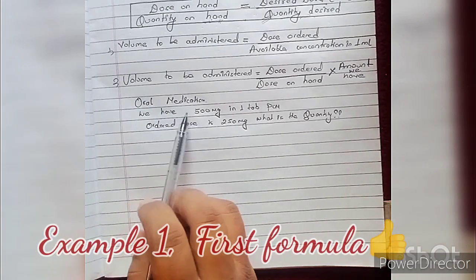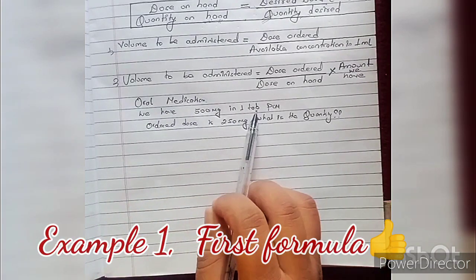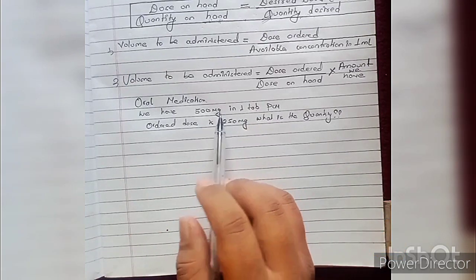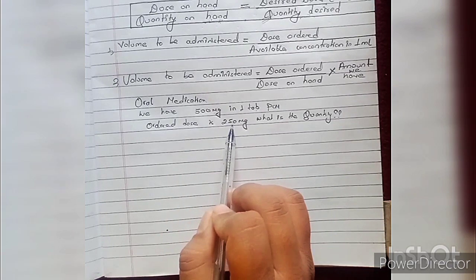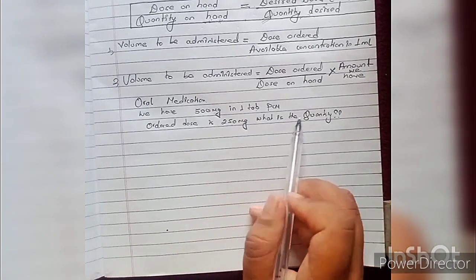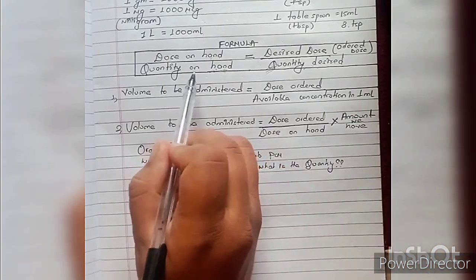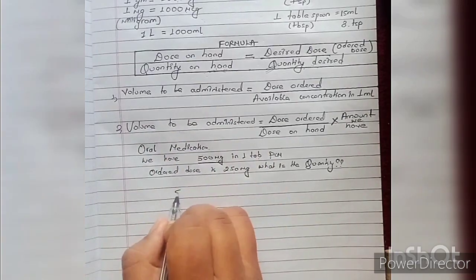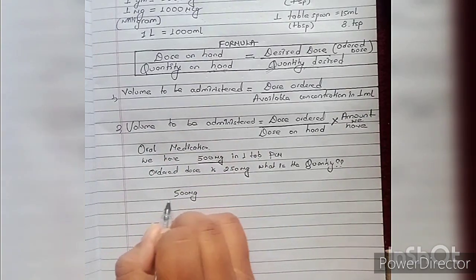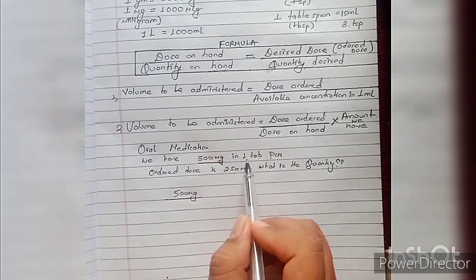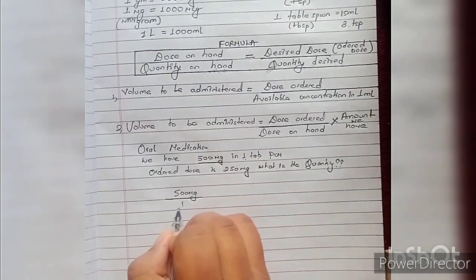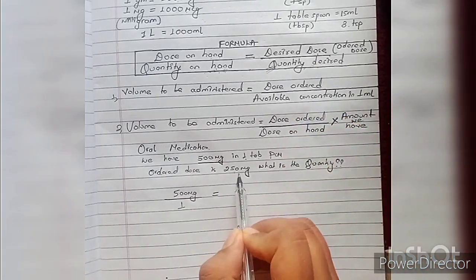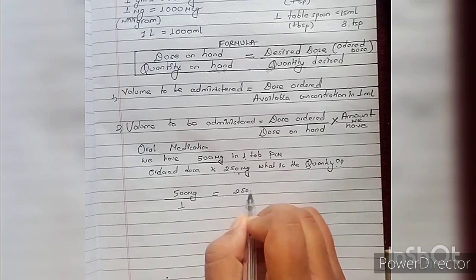For oral medication: I am going to give 500 mg PCM — in one tablet there is 500 mg of PCM. The ordered dose is 250 mg of PCM. So I am going to apply this formula. Dose on hand is 500 mg upon quantity on hand, which is 1 tab. This equals the desired dose of 250 mg.